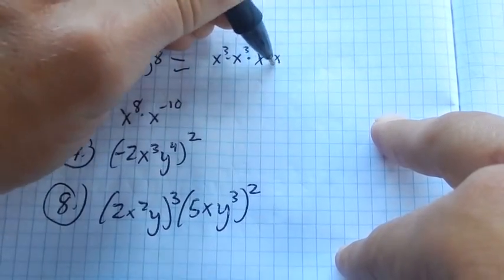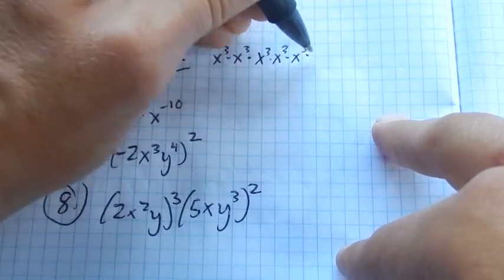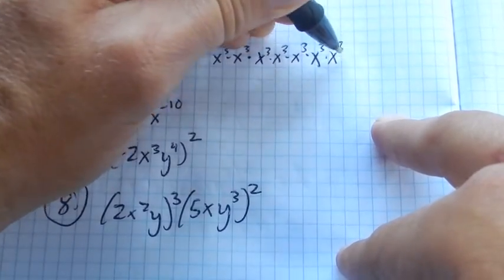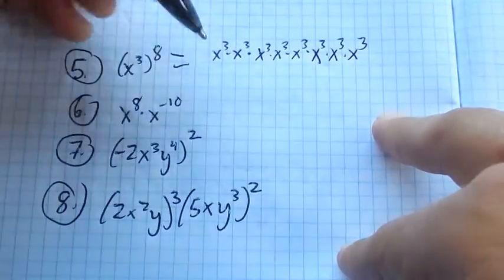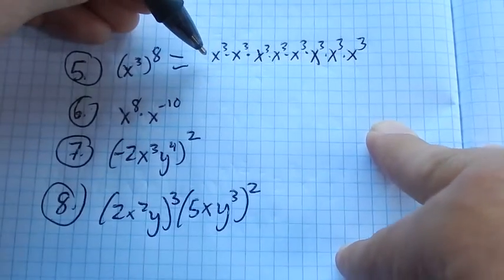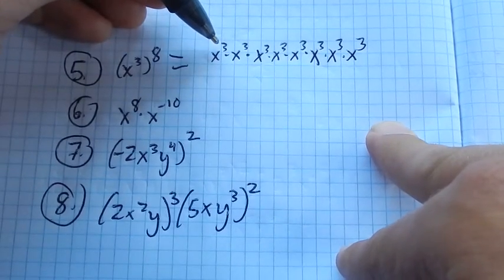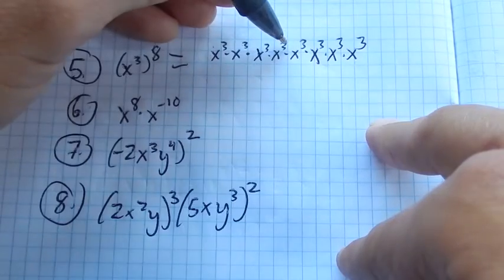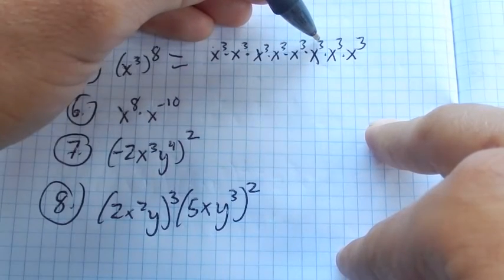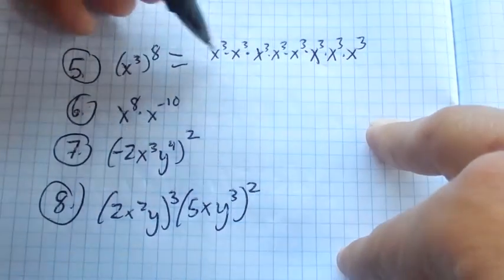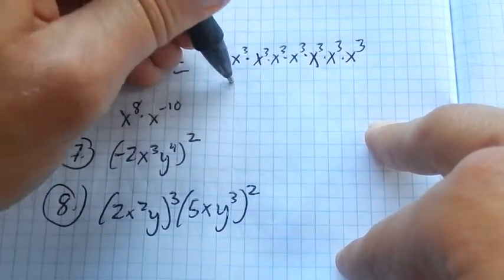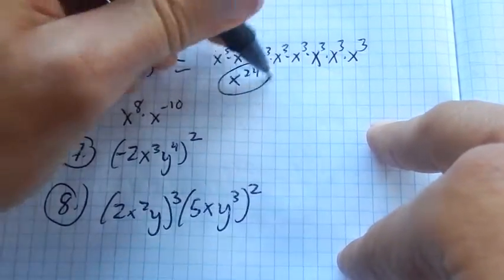So 1, 2, 3, 4, 5, 6, 7, 8. And then x cubed means x times itself 3 times. So 3, 6, 9, 12, 15, 18, 21, 24. So I basically have 24 x's all multiplied together here. x to the 24th.